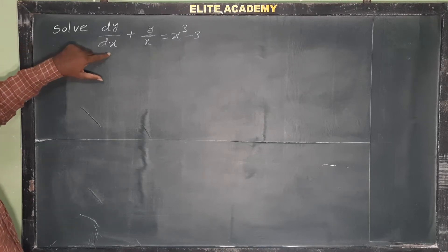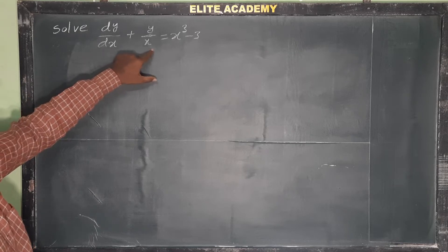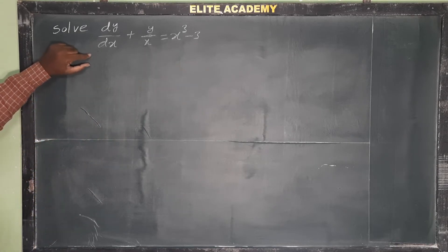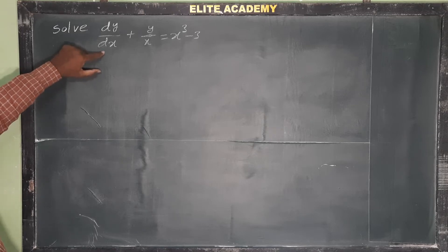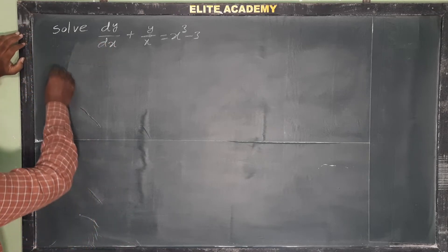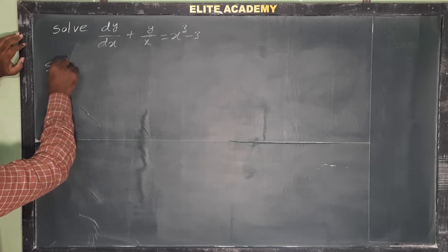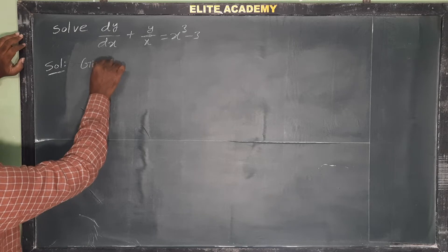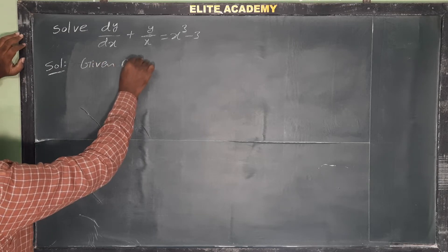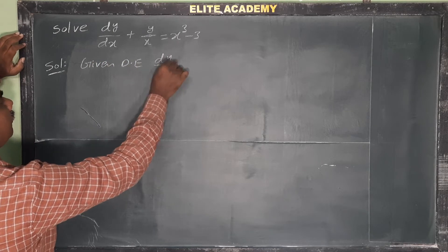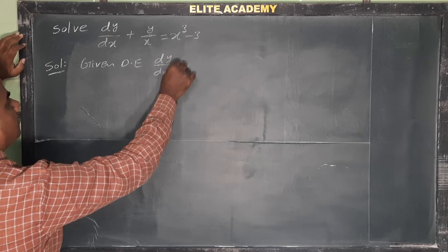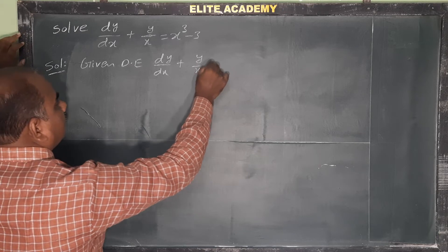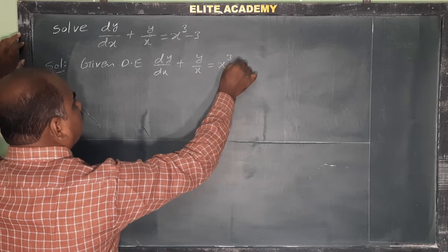Solve dy/dx + y/x = x³ - 3. It is a linear differential equation in terms of y, and we have to solve this equation. Given differential equation: dy/dx + y/x = x³ - 3.